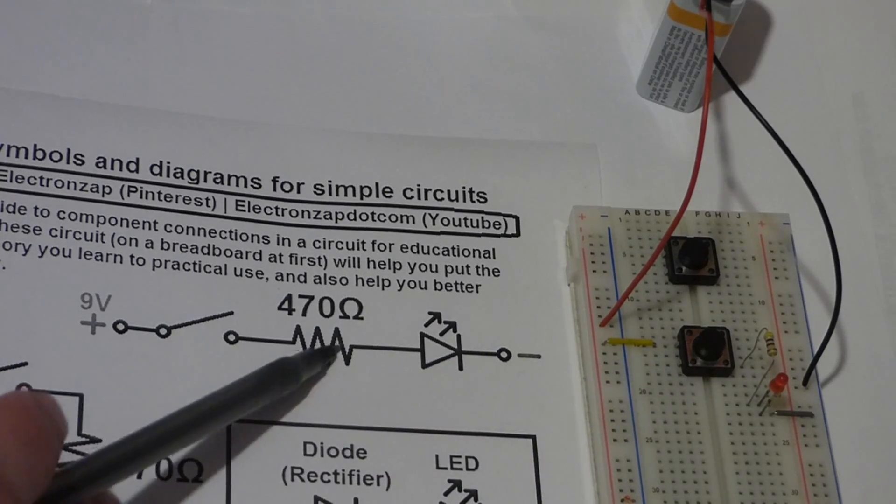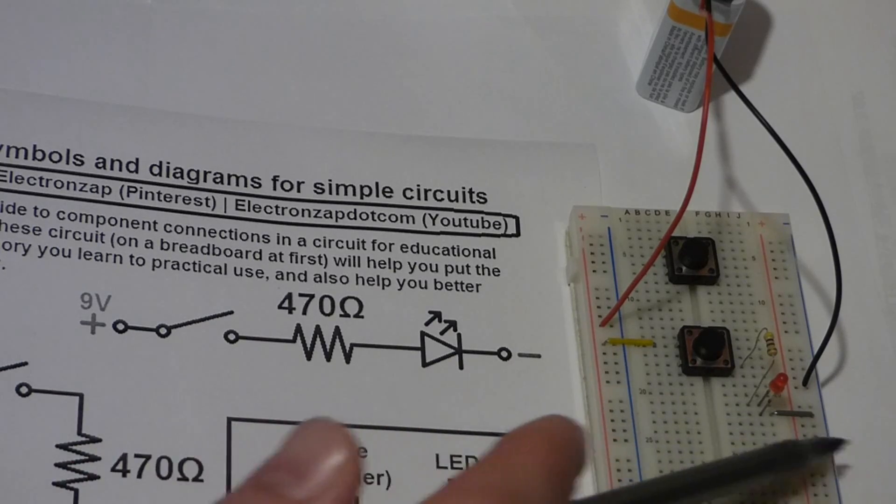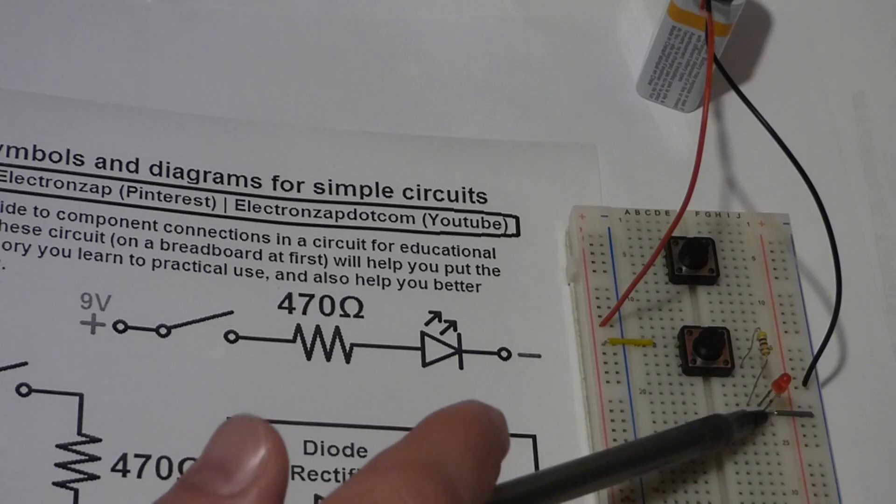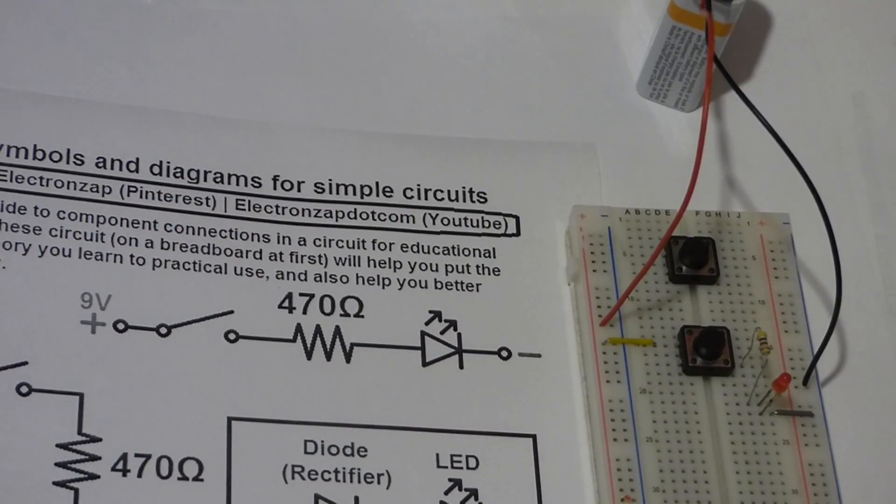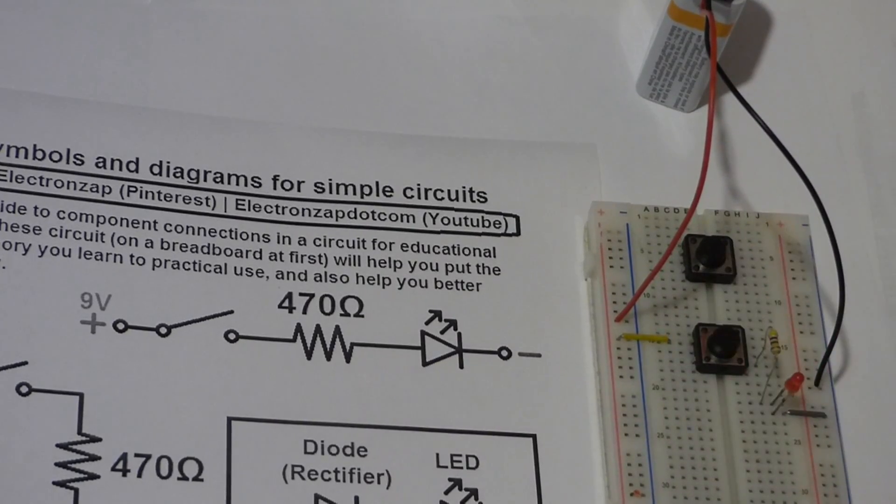We have a switch coming first then the resistor, moving to the right, and then it comes to the LED which bumps over to the right a little bit more and then heads back to ground. And as you can see when we close the switch the LED turns on.